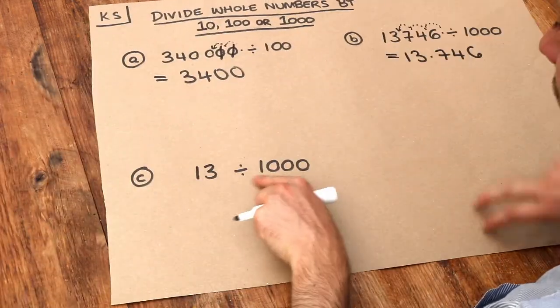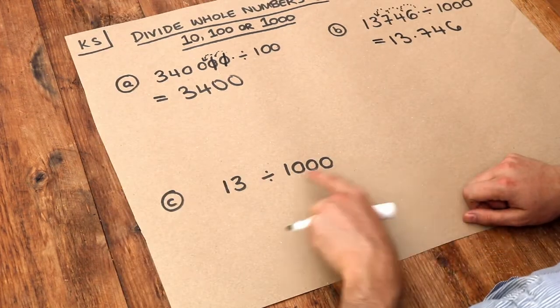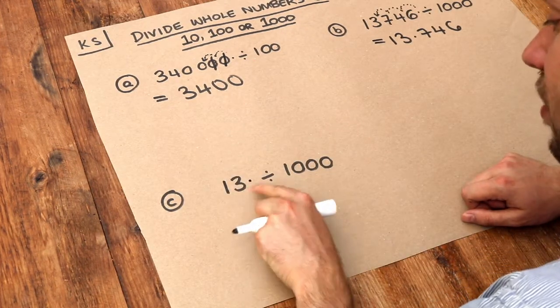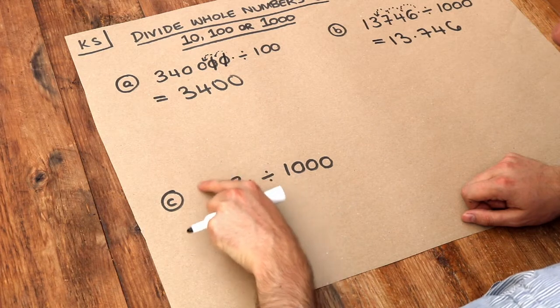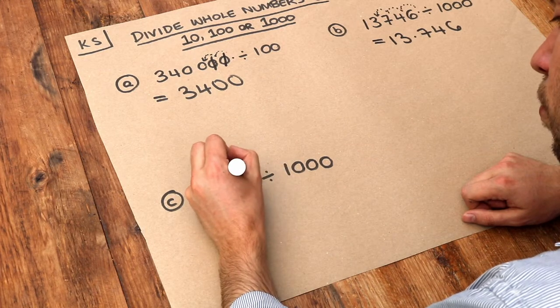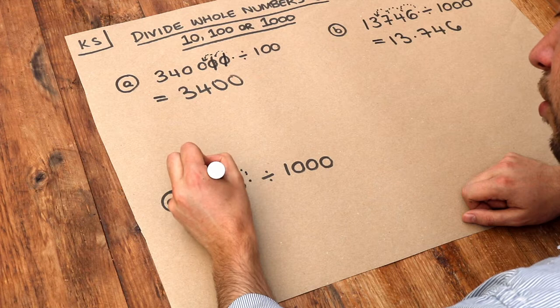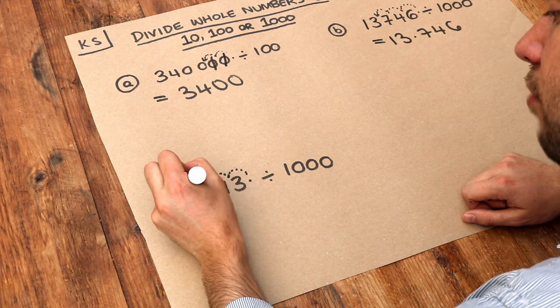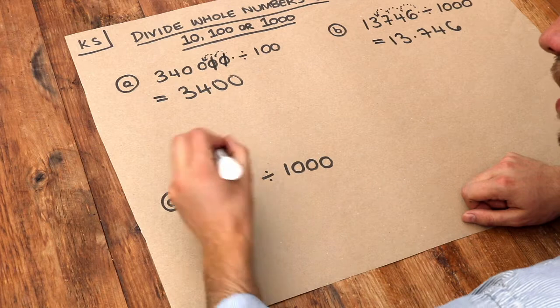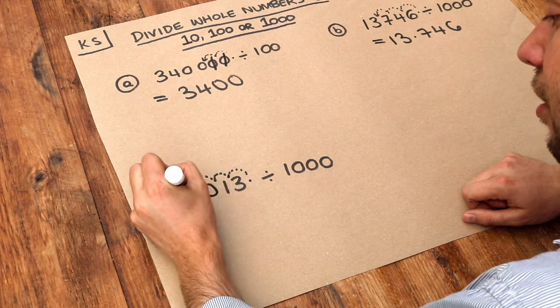13 divided by 1000. We've got three zeros there, so we need to move the decimal point three places to the left. Let's do that—one, two, three. Now we've run out of digits at the front, so we need to add extra zeros.